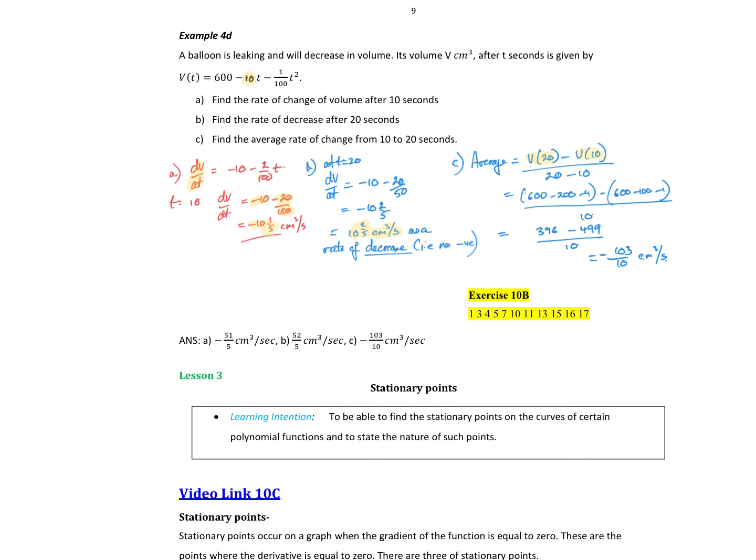Then we have our average rate of change from 10 to 20, average rate of change, y2 minus y1, x2 minus x1. So that's that v of 20 minus v of 10 over 20 minus 10. So we substitute those values in, we'll get 600 minus 200 minus 4, subtract 600 minus 100 minus 1, all over 10. So 396 minus 499 will give me negative 103 on 10 centimeters cubed per second. So that's my average rate of change.